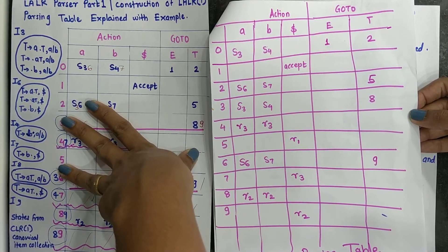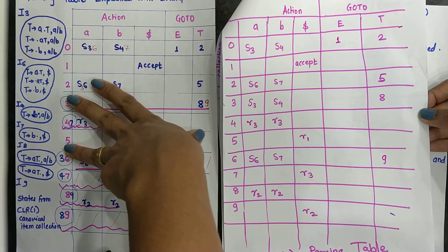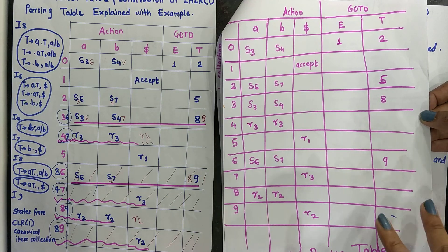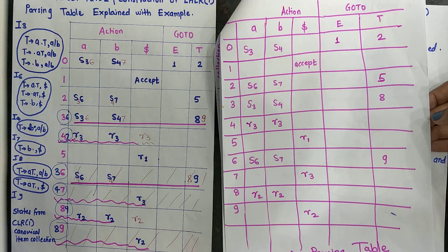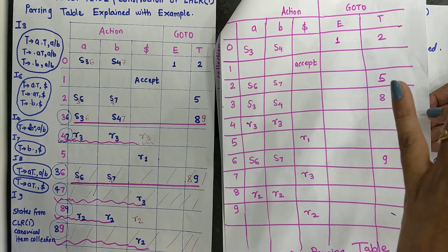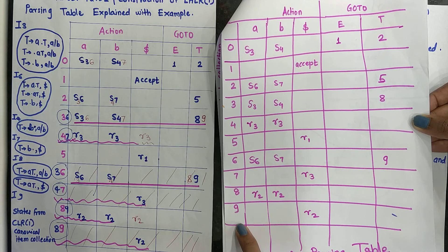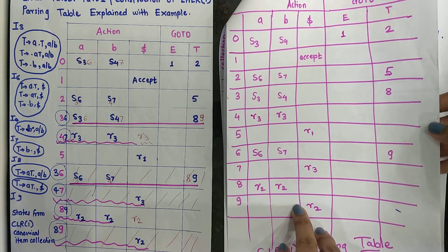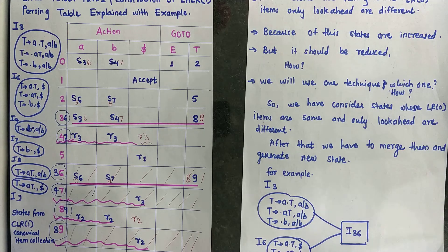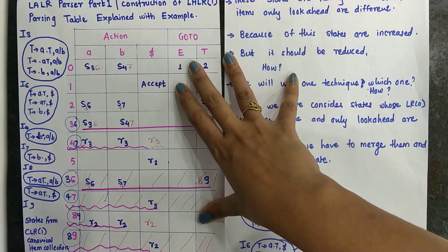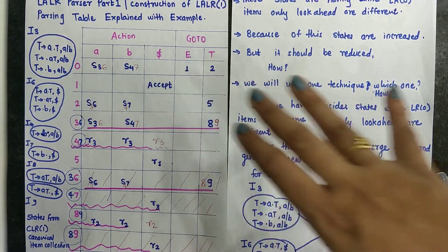The same table and same example are used here for constructing the LALR1 parsing table. What modifications do we have to make in CLR1 to get LALR1? In CLR1, we generated 10 states — states 0 to 9. This is quite a large number; processing time will be more. So in LALR1, we are going to reduce the number of states because that is the problem we need to solve.